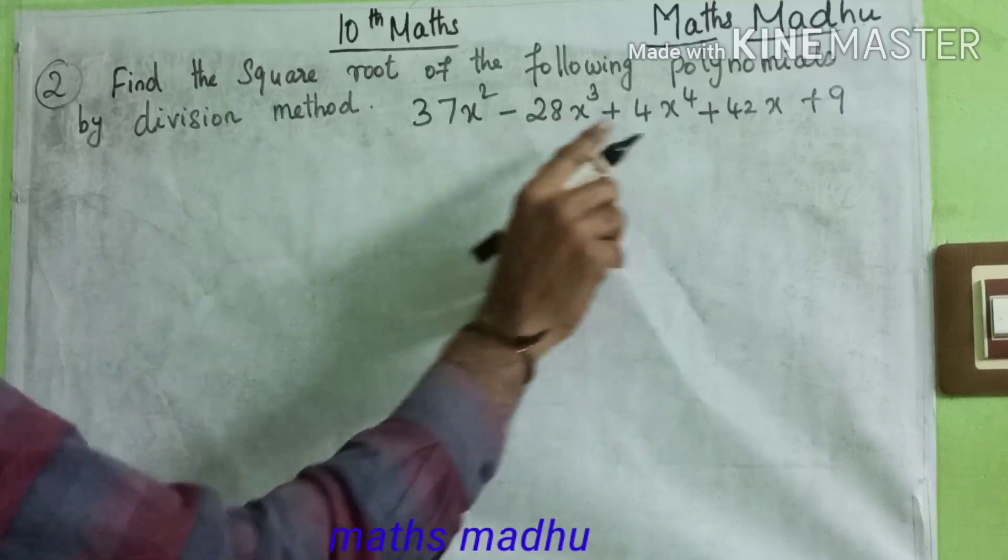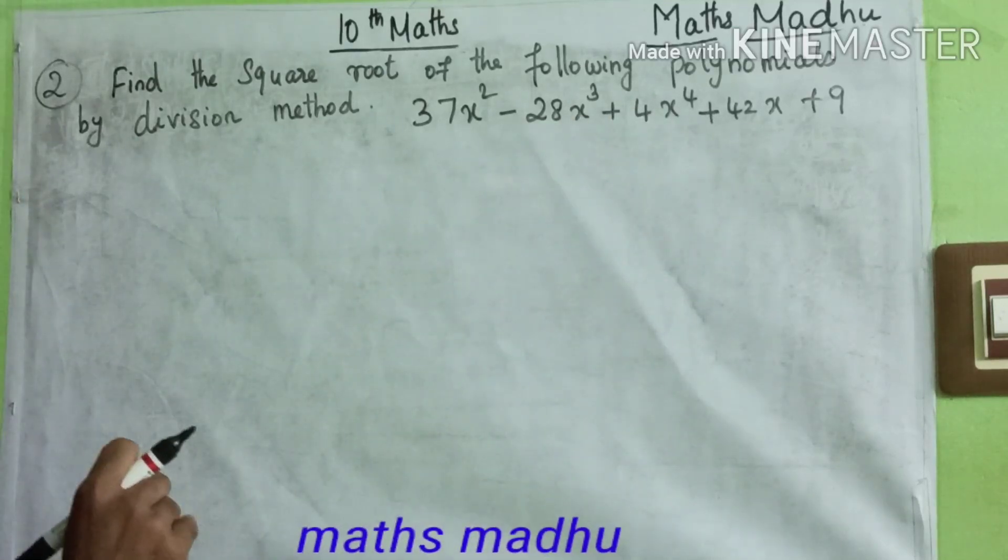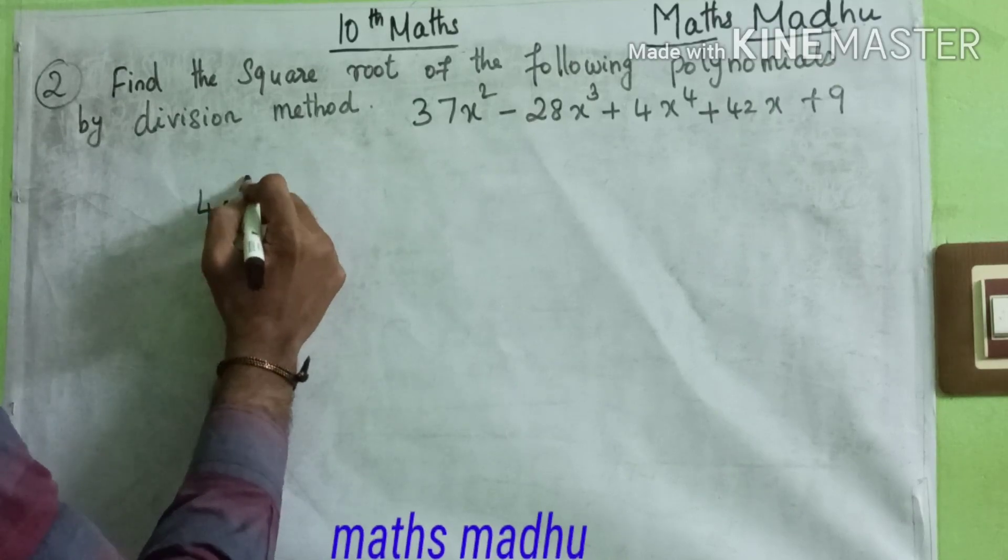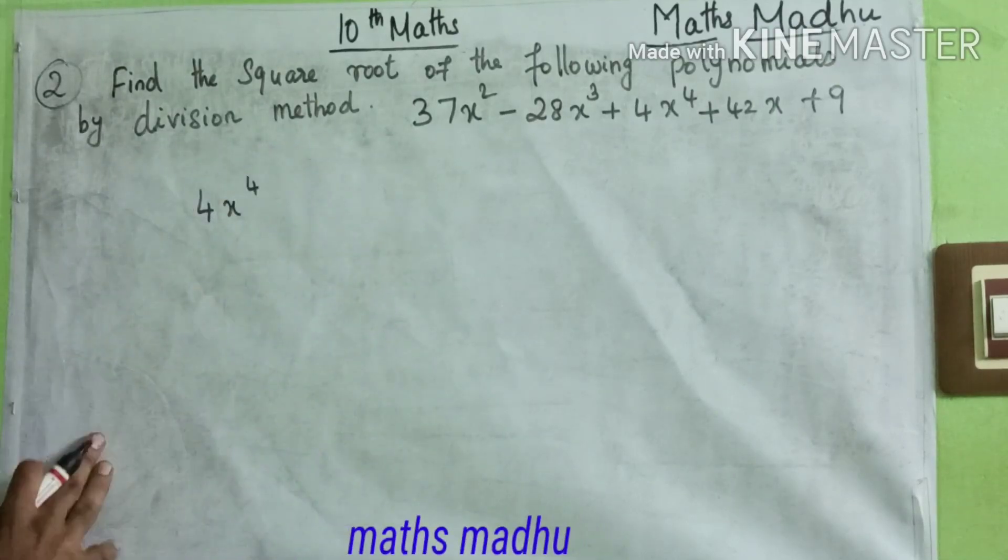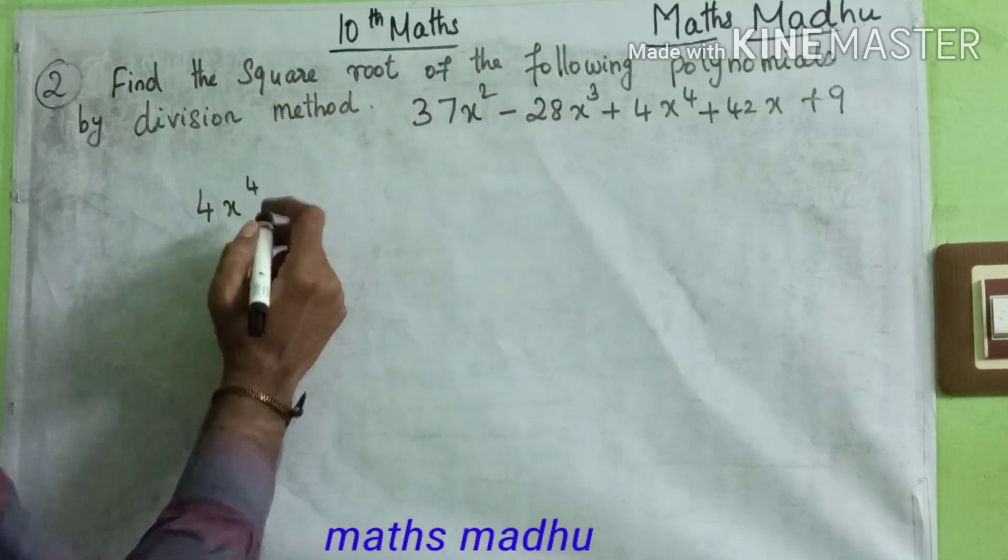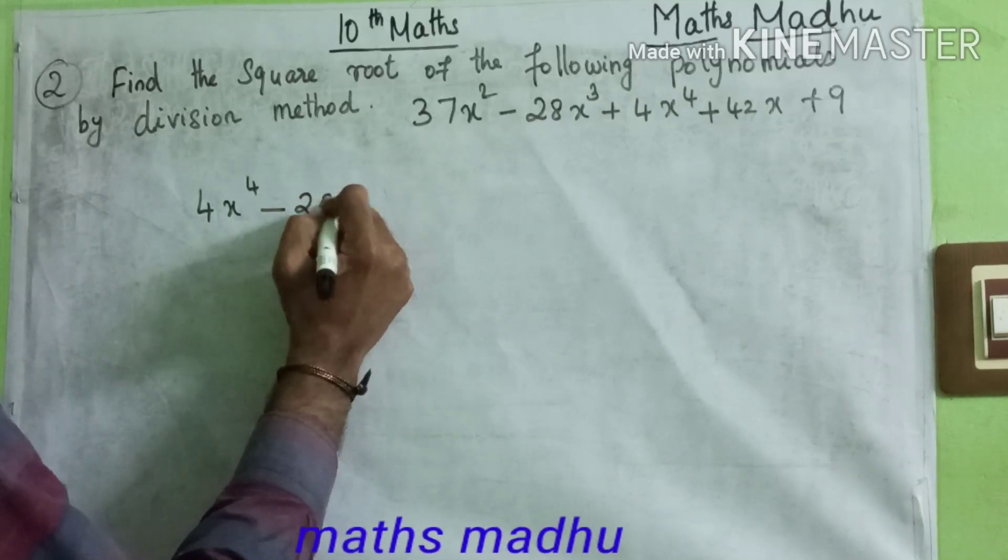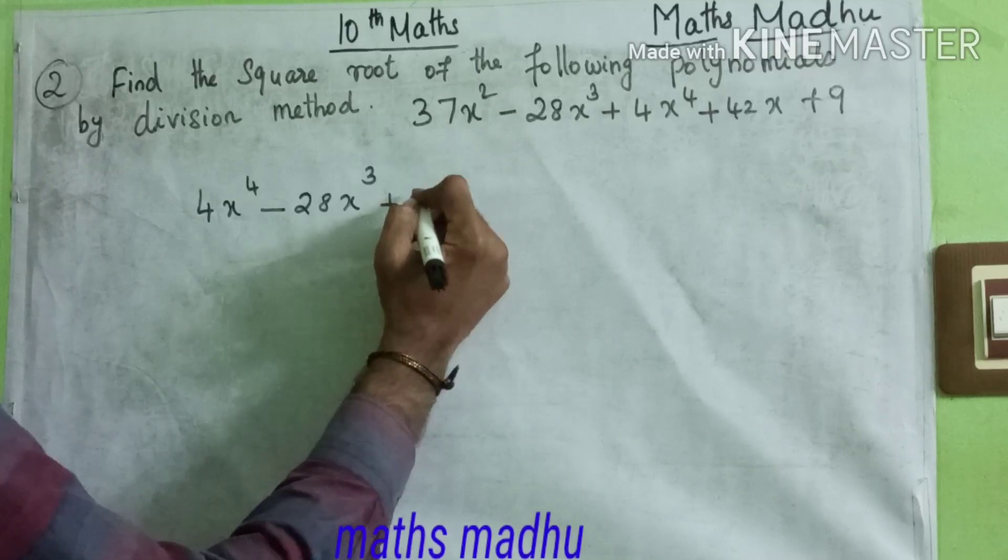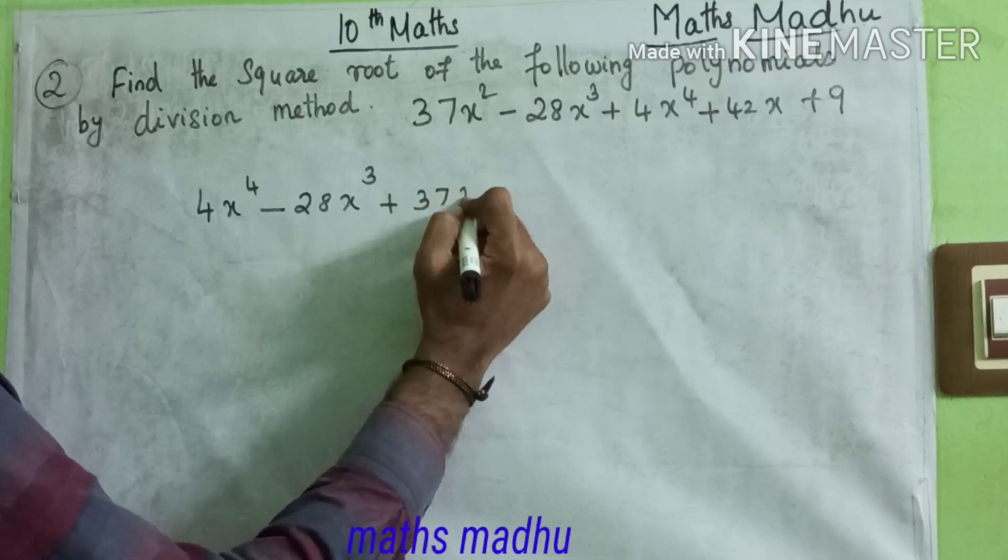So first we'll take 4x⁴. So 4, 3. So minus 28x³. Add this square, add this square 37x².